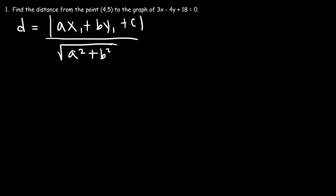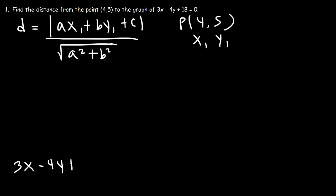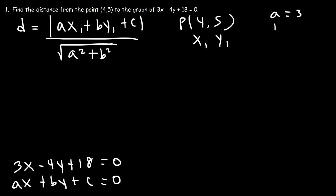So what's a, b, and c? And what's x and y? We have the point 4 comma 5 — 4 is x1, 5 is y1. And we have the formula 3x minus 4y plus 18. This is in standard form, ax plus by plus c is equal to zero. So we can see that a is equal to 3, b is equal to negative 4, and c is equal to 18. x1 is 4, and y1 is 5.